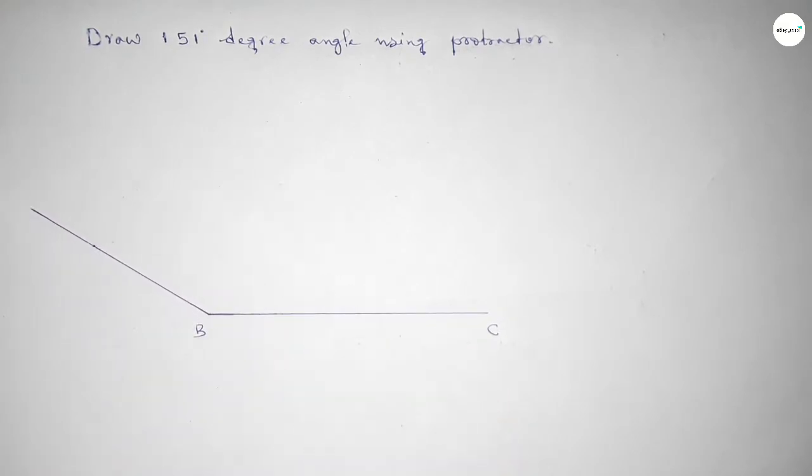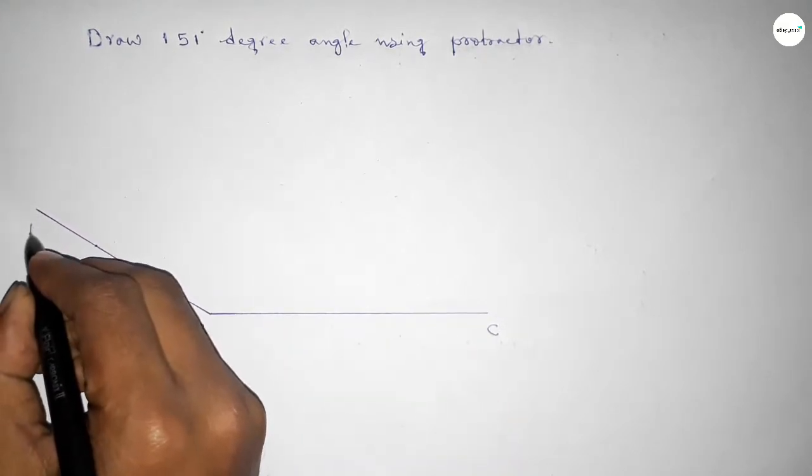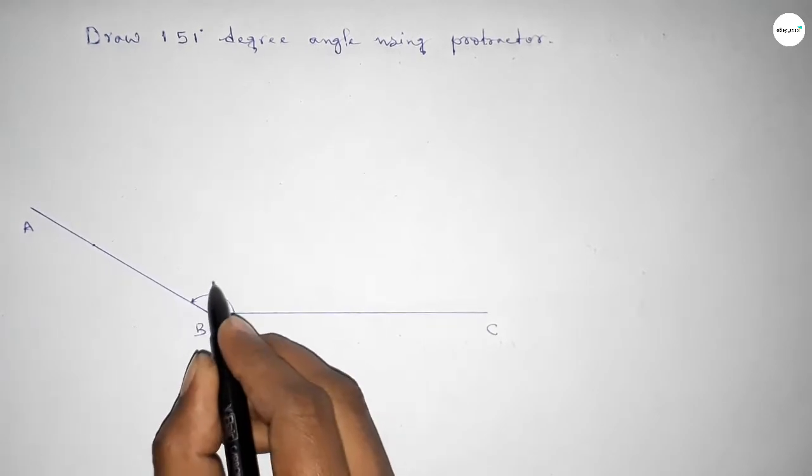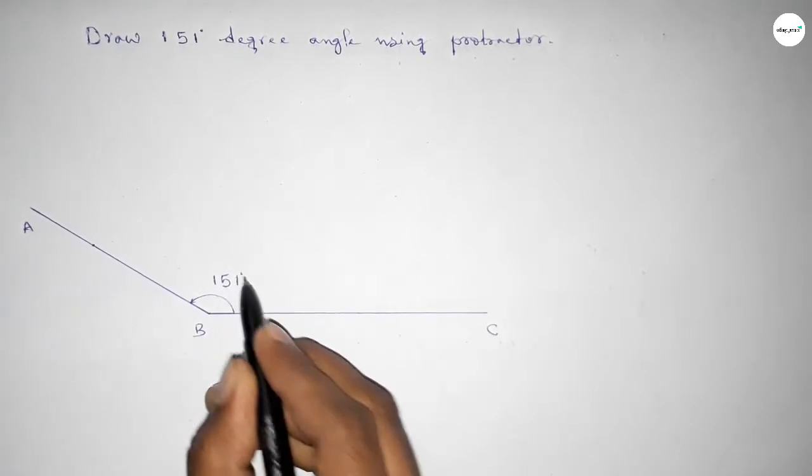Now joining this side to get 151 degrees. Now taking here point A. So angle ABC up to this, this is 151 degrees angle.